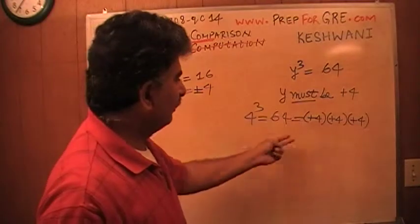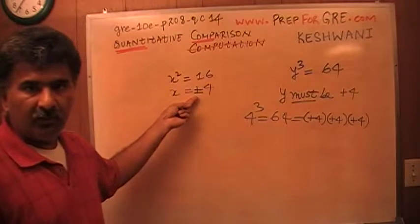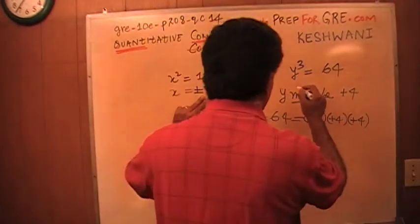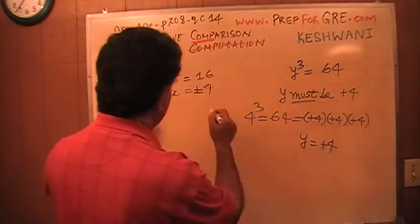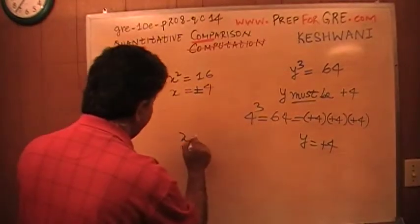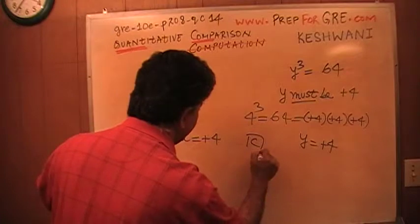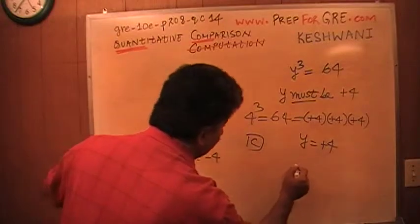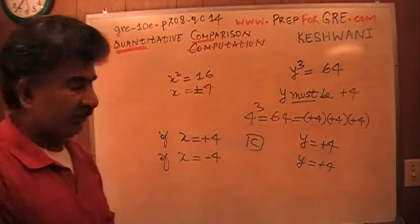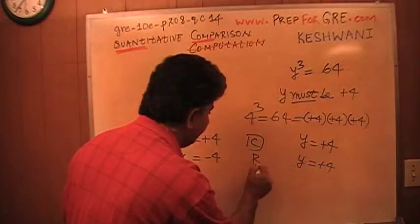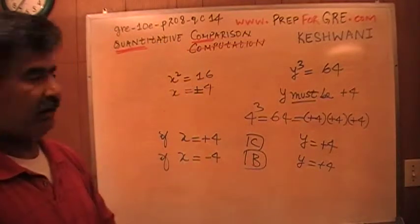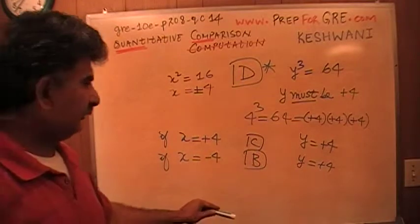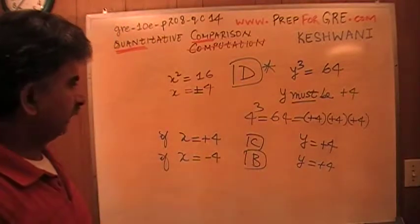Since Y cubed is 64, Y is positive 4. X is either positive 4 or negative 4 — we do not know which. If X is positive 4 and Y is positive 4, the answer would be C. If X is negative 4 and Y is positive 4, the answer would be B. Since we get a conflicting answer, the correct answer is D.